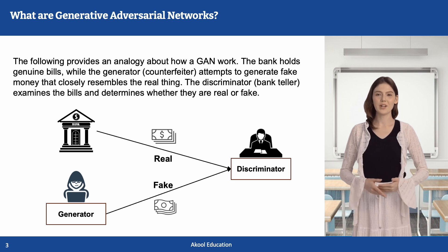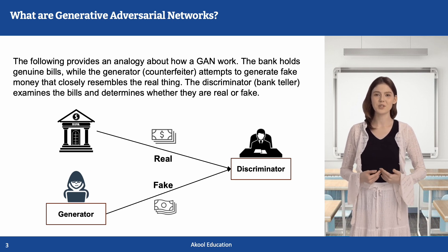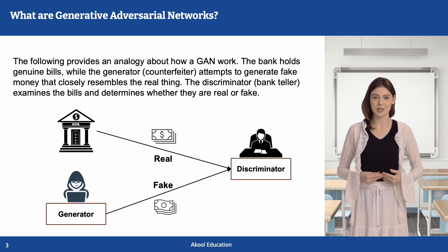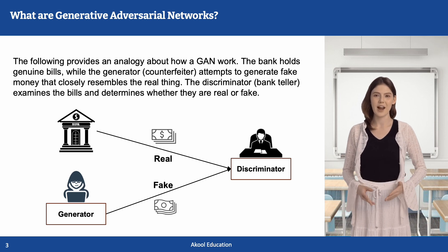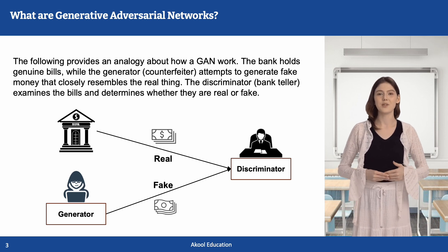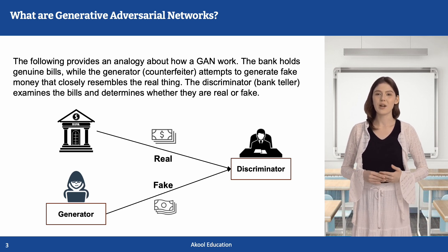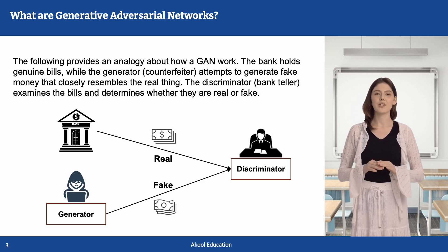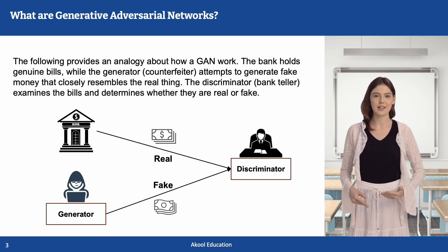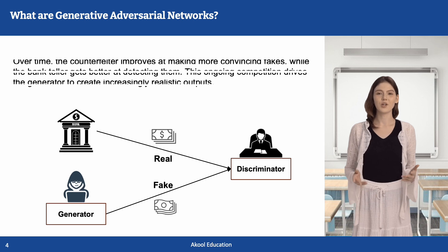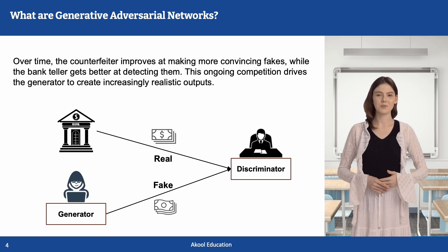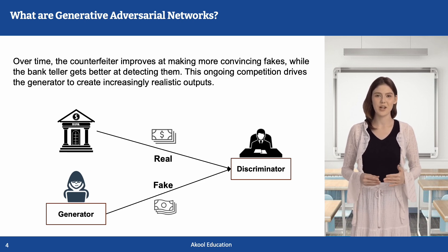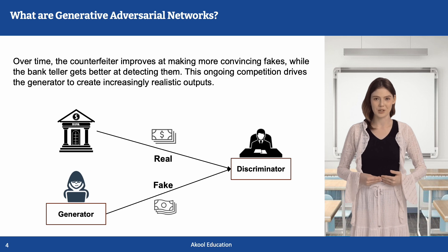To better understand how GANs work, let's use an analogy: a counterfeiter and a bank teller. The generator is like a counterfeiter trying to create fake currency that looks authentic. The discriminator is like a bank teller trained to detect counterfeit money from real bills. Initially, the counterfeiter produces poor-quality fakes, but over time they improve by studying real currency.